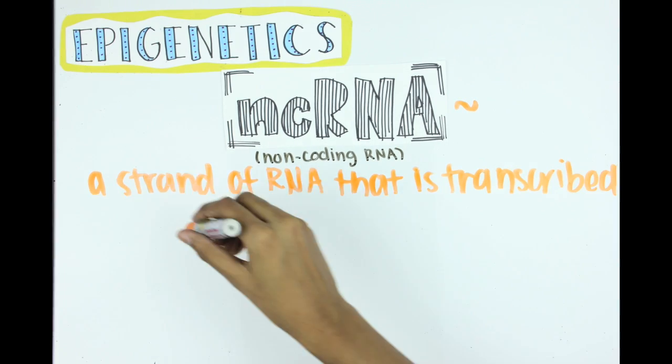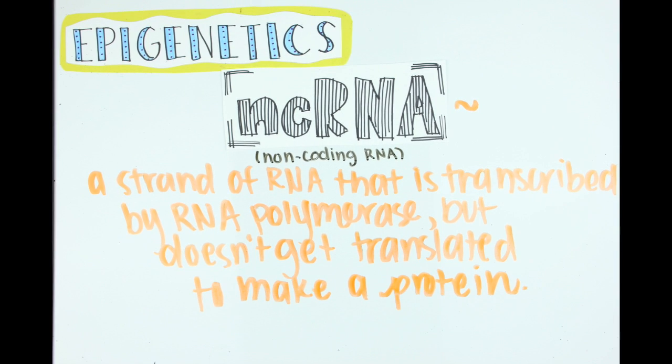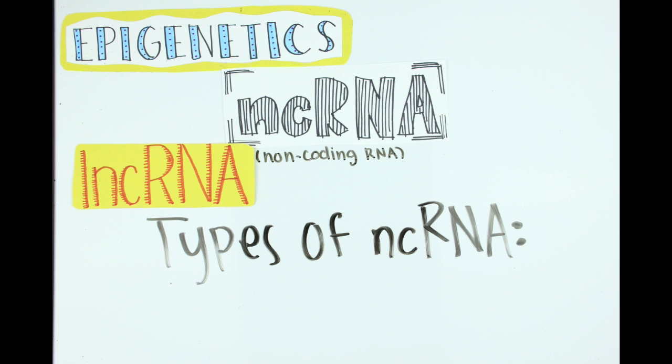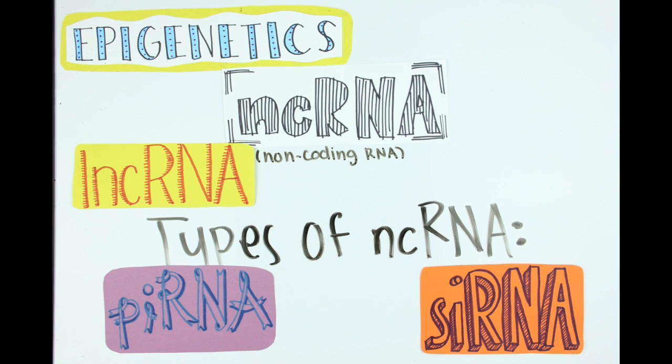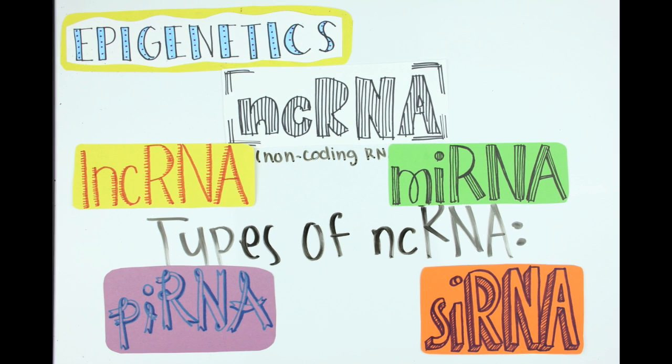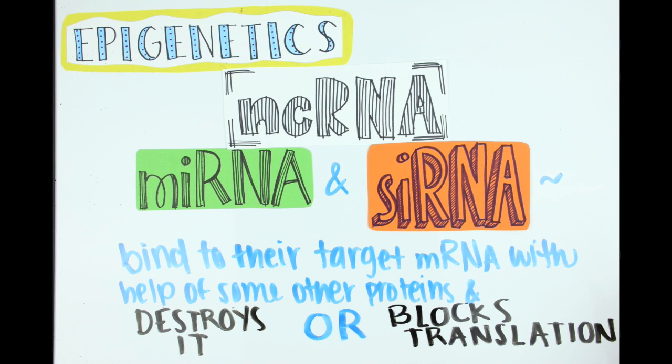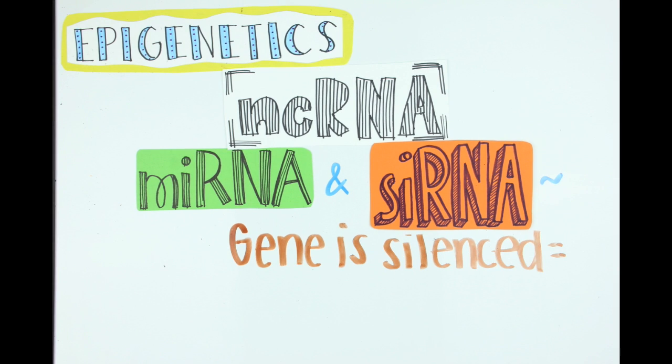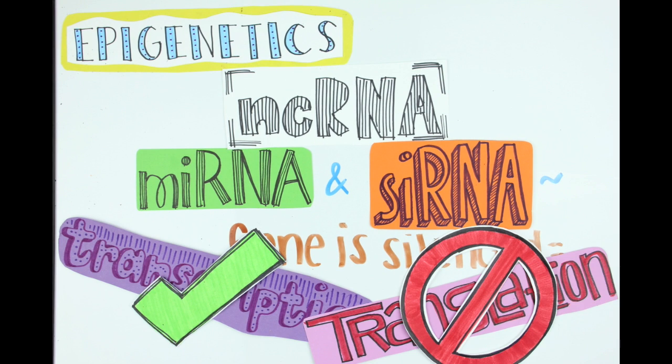Non-coding RNA is a strand of RNA that is transcribed by RNA polymerase but doesn't get translated to make a protein. There are many types of non-coding RNA, like long non-coding RNAs, short interfering RNAs, PIWI-interacting RNAs, and microRNAs. MicroRNA and short interfering RNA bind to the target mRNA strand with the help of some other proteins and either destroy it or block translation. This way, the gene is silenced. The gene will be transcribed but won't be translated into a protein.